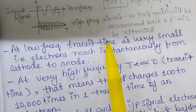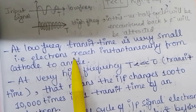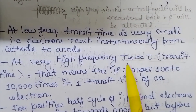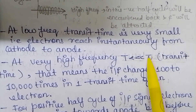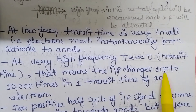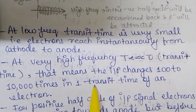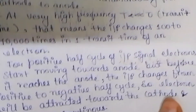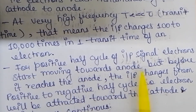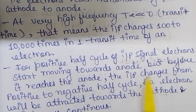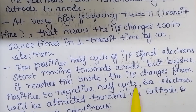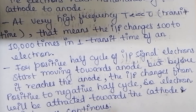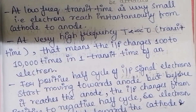At low frequency, the transit time is very small — electrons reach almost instantaneously from cathode to anode. But at high frequency, where T << τ, the input changes hundreds to thousands of times in one transit time of an electron. So for the positive half cycle of the input signal, electrons start moving towards the anode, but before they reach it the input changes from positive to negative half cycle, causing electrons to be attracted back towards the cathode. This process continues repeatedly.